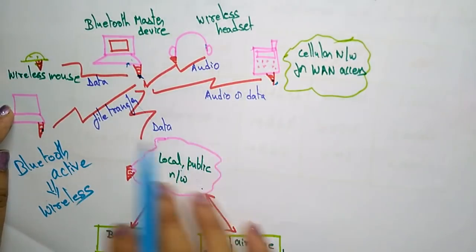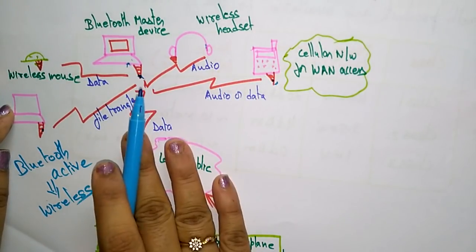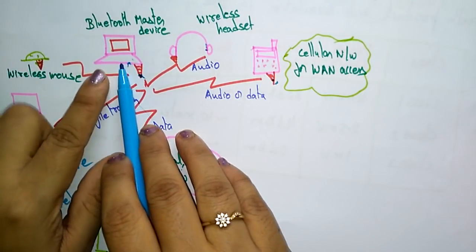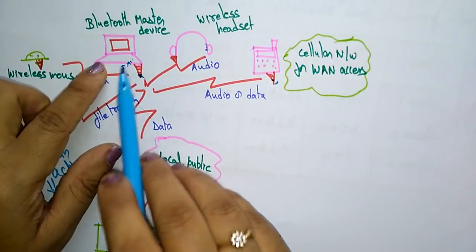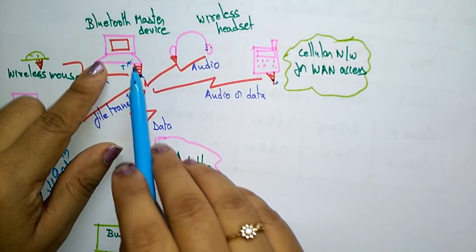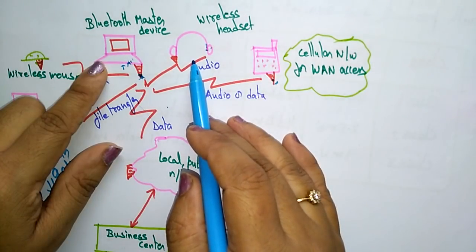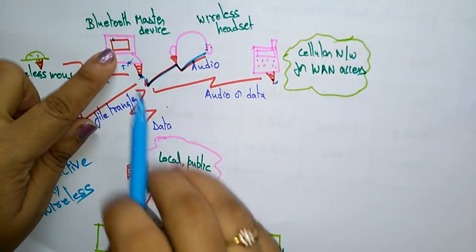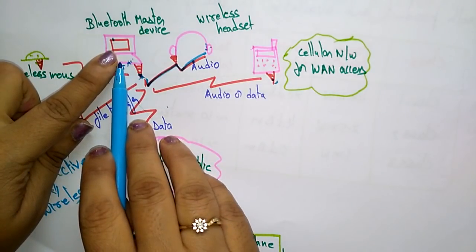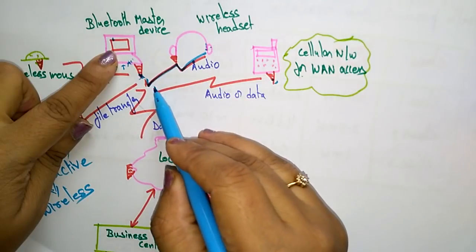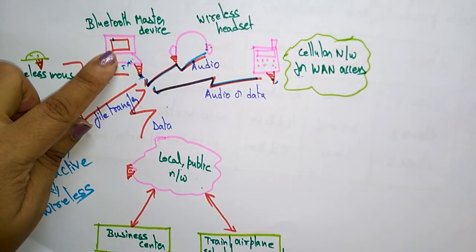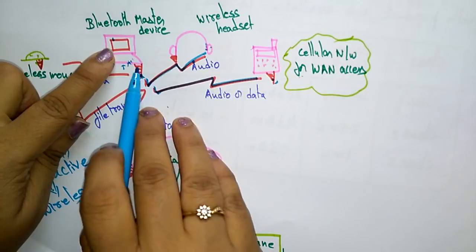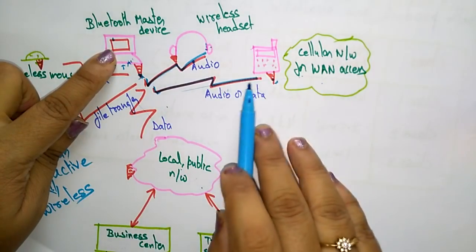With Bluetooth, we connect all devices close to the person — close to the master device. For example, I select the wireless headset to listen to songs, so audio is transferred from the Bluetooth master device to the wireless headset. Similarly, I can transfer audio or data to my mobile phone — transferring files from the PC using Bluetooth, which is a wireless Personal Area Network.